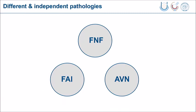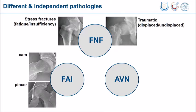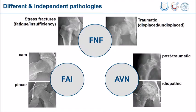We all know the different entities of impingement, of femoral neck fractures, and of avascular necrosis. When we start with femoral neck fractures, we have stress fractures due to fatigue or insufficiency fractures, and we can have traumatic fractures. There are some very easy, understandable pathways between these three disorders.